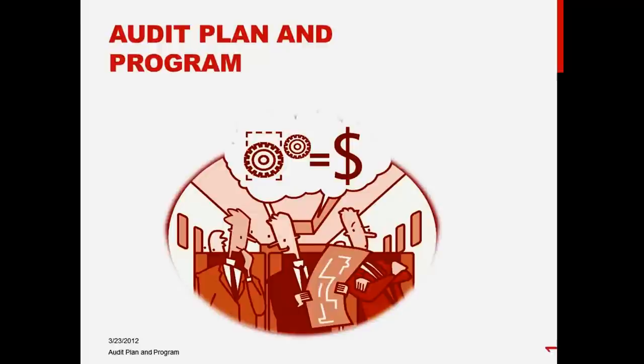We've gathered information, made our risk assessments, and now we have to develop our audit procedures. What audit procedures are we going to perform? Because we've identified those accounts with their potential misstatements. In the Pinnacle case, most people talked about accounts receivable — there's a concern about fictitious sales and its impact on accounts receivable — or inventory obsolescence reserve.